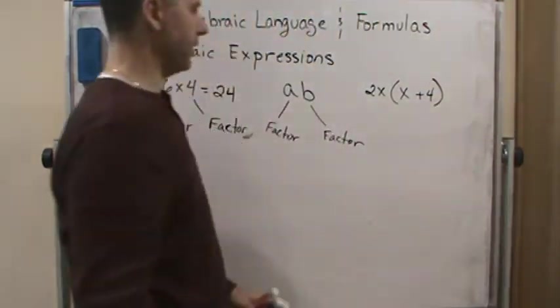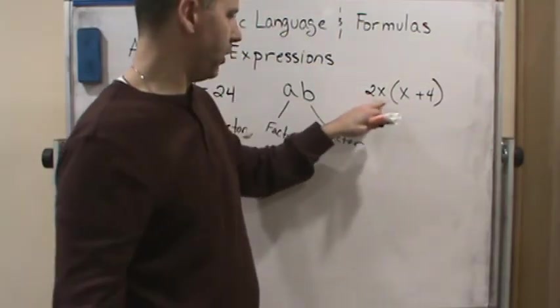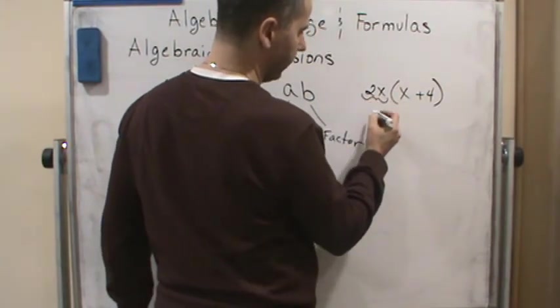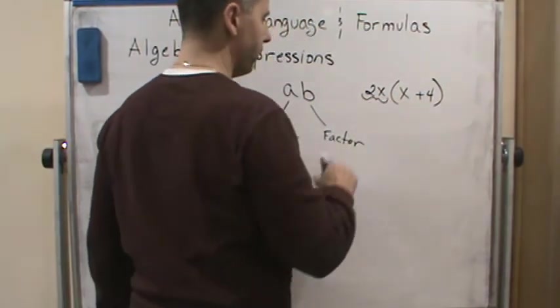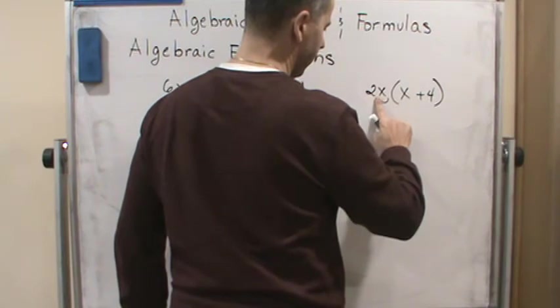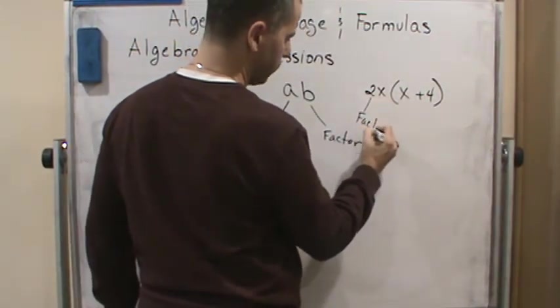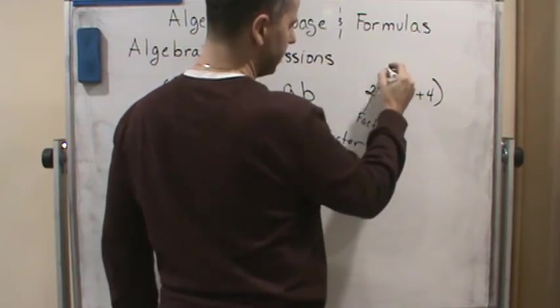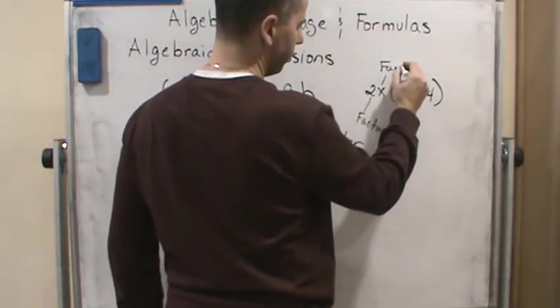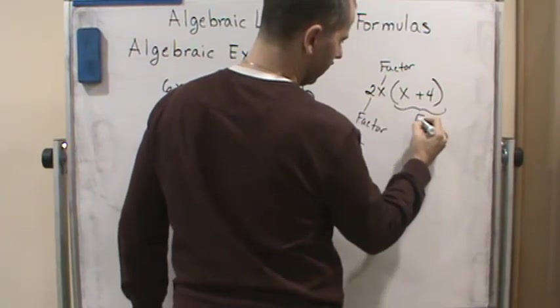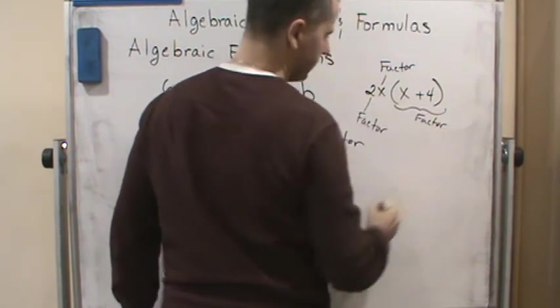So here we've got an algebraic expression that involves multiplication. So that would mean this piece right here, well, actually even better. Well, there's more than one. Well, so here two would be a factor. That's one factor. X is a factor. And then, of course, this thing is a factor.